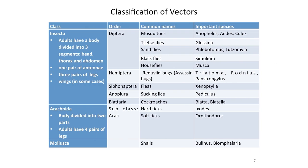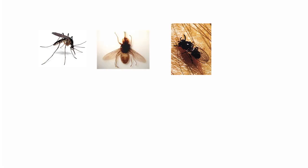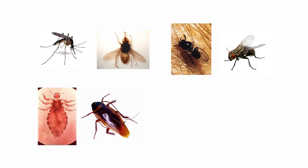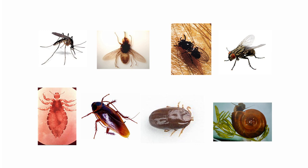In classifying vectors, we have mainly arthropods and then snails, which belong to another group. In the scientific classification, the arthropods have two groups: Insecta and Arachnida. The common names of these vectors include mosquitoes, tsetse flies, black flies, house flies, lice, cockroaches, ticks, and snails, which I'm sure everybody has heard about.